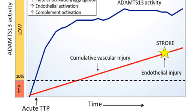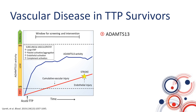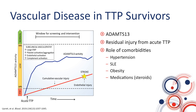This brings us to a new model of vascular disease in TTP survivors where ADAMTS13 plays a role. If ADAMTS13 activity is less than 10%, acute TTP can occur. But a large number of patients live between 10 and 70%, just subnormal, with the potential for cumulative vascular injury from subclinical TMA — including large von Willebrand factor multimers, subclinical platelet activation and aggregation, endothelial cell activation, and perhaps complement involvement. This cumulative vascular injury reduces the threshold for major cardiovascular events such as stroke. Residual injury from acute episodes and other prevalent comorbidities may also contribute.